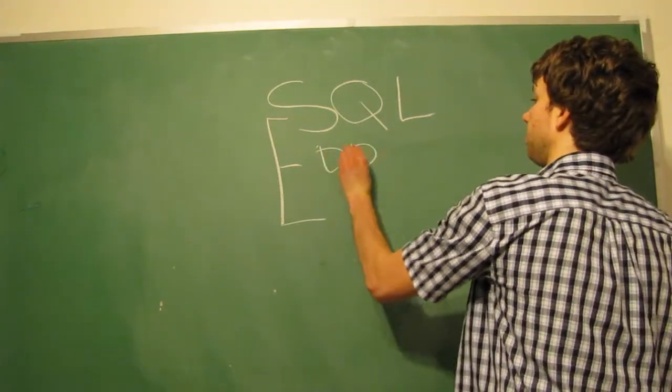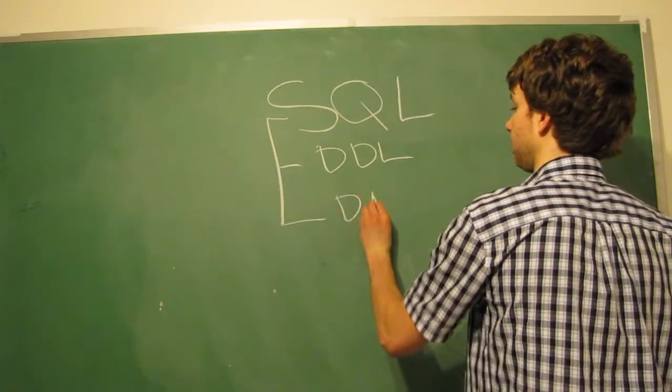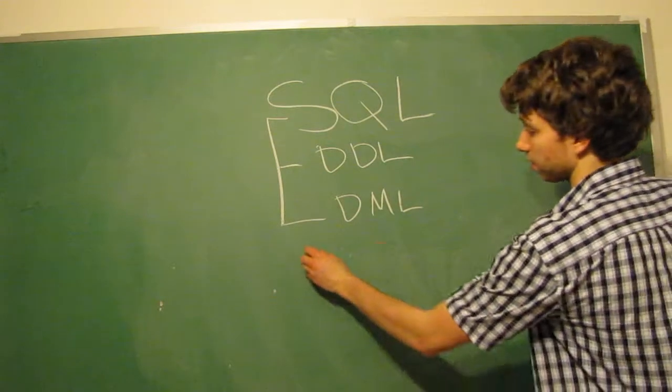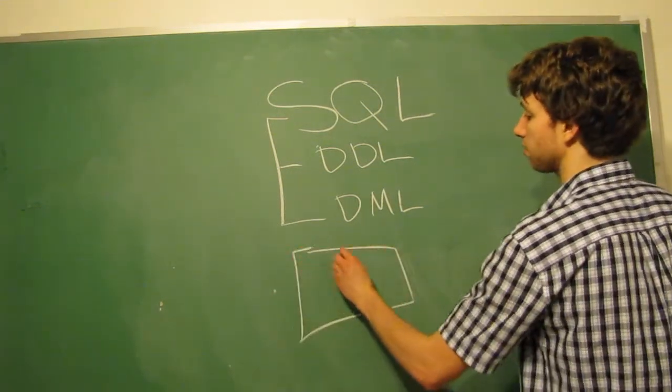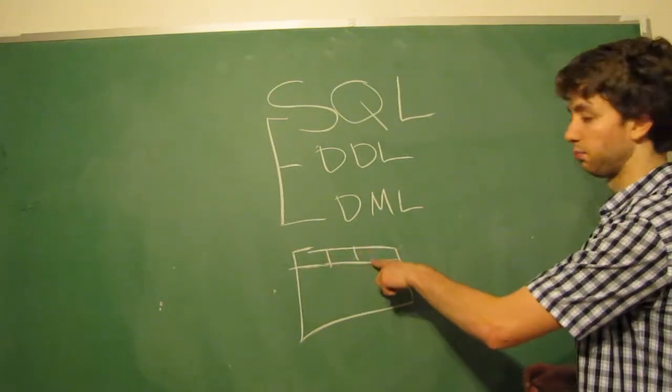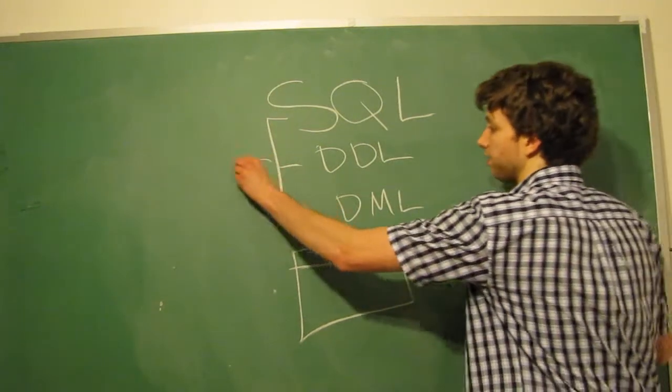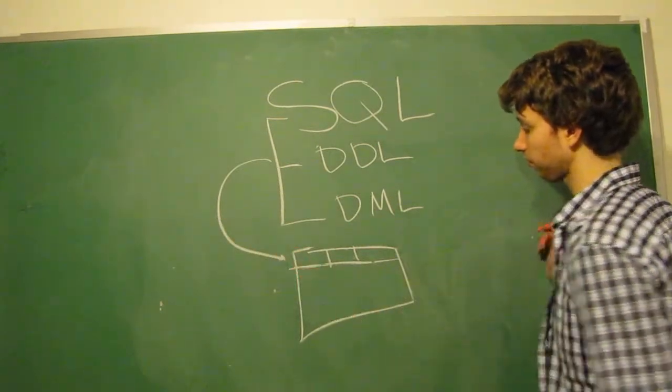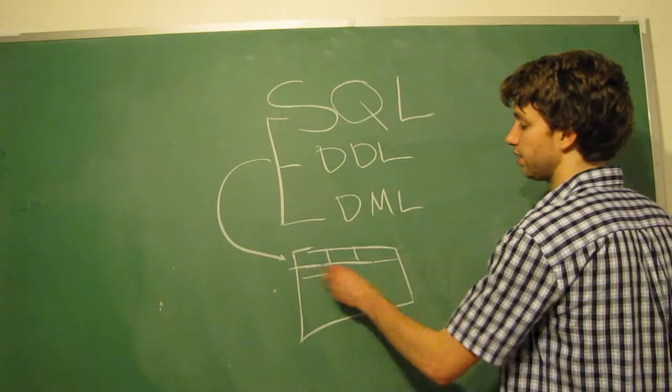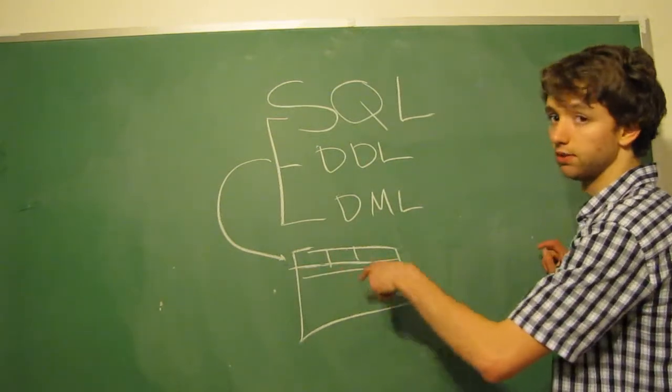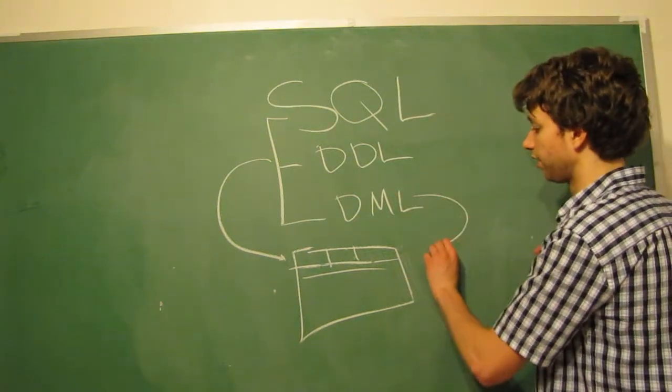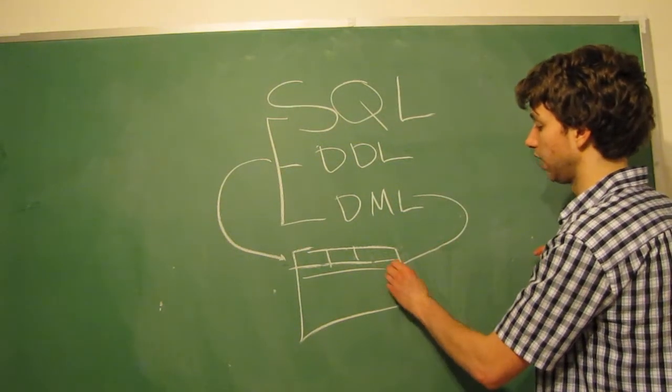We have DDL, DML. And we have a table, for example. I'm just going to write this down here. And we have the columns. So we have ID, username, password. Well, that's data definition language. Data manipulation language is what we would use to insert a new value, such as the ID of 72 with the username of Caleb Curry, the password of PI123. That's data manipulation language.